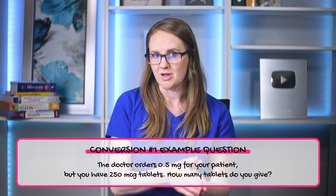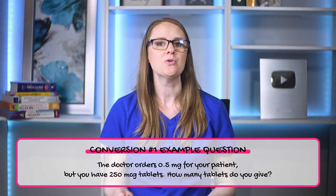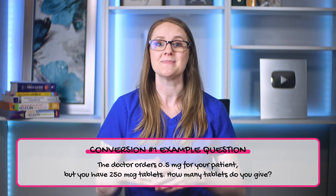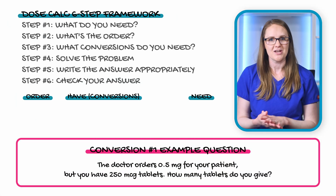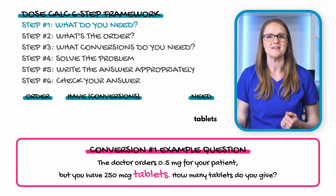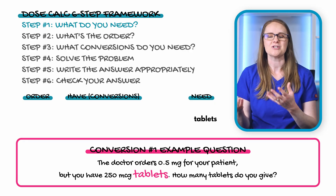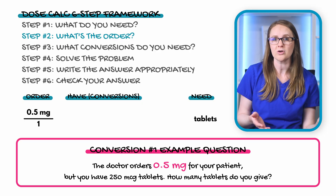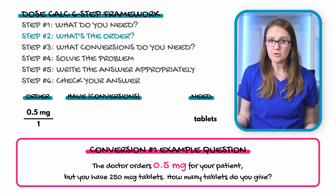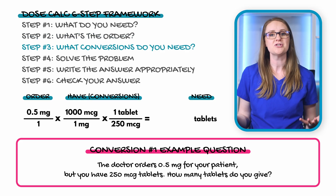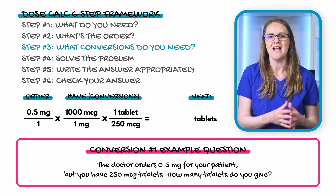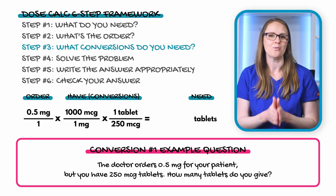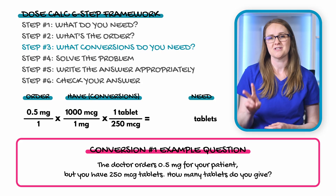Here's our question: the doctor orders 0.5 milligrams for your patient, but you have 250 microgram tablets available. How many tablets will you give? Step one: what unit do we need at the end? Tablets. Step two: what's the order? 0.5 milligrams. Step three: what conversions do we need? One milligram equals 1,000 micrograms, and 250 micrograms equals one tablet — those are the two conversions we need.